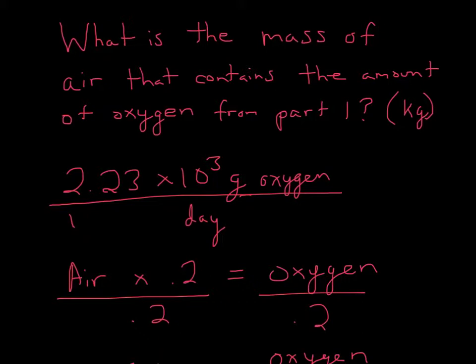What we actually did in the previous one, in part 1, is we did air, total air, times 0.2 would give us oxygen. So they want the reverse. They want what is the mass of air.